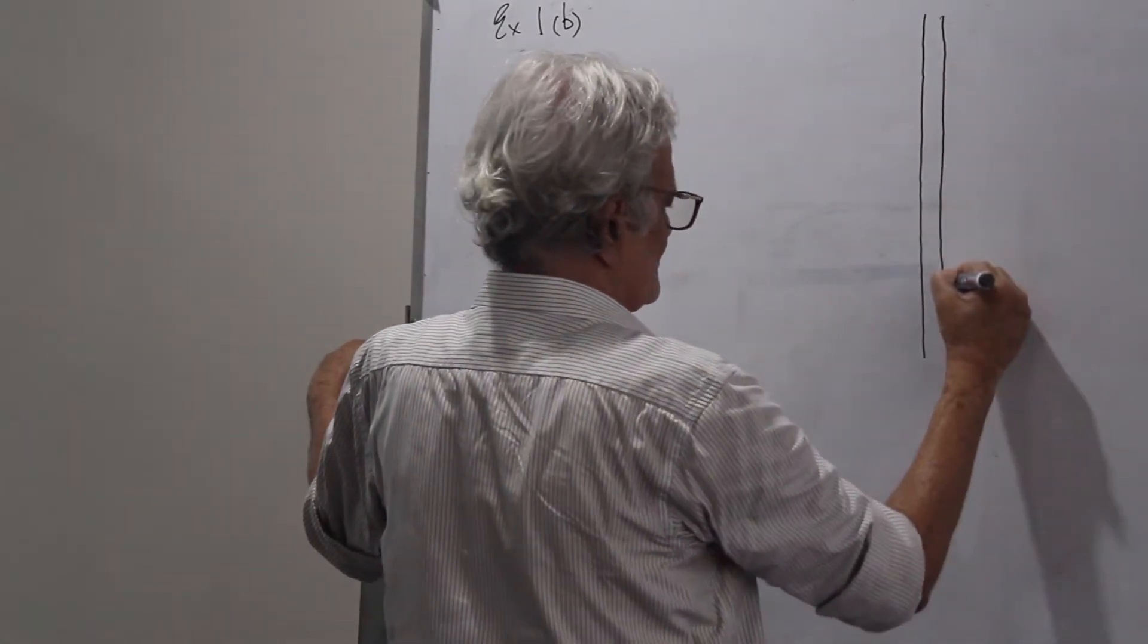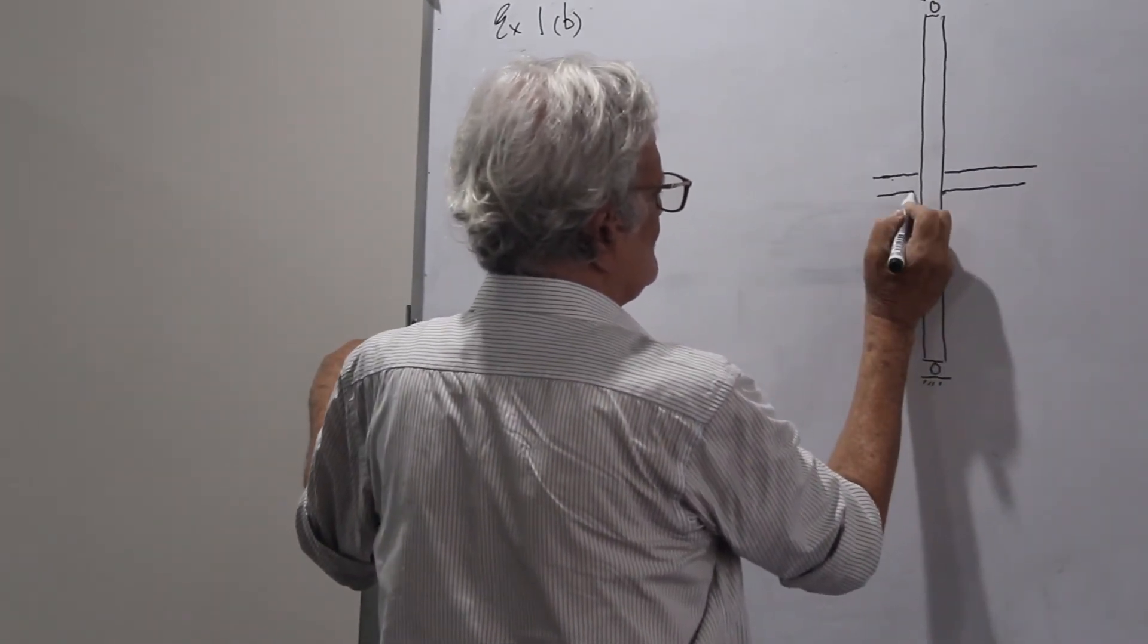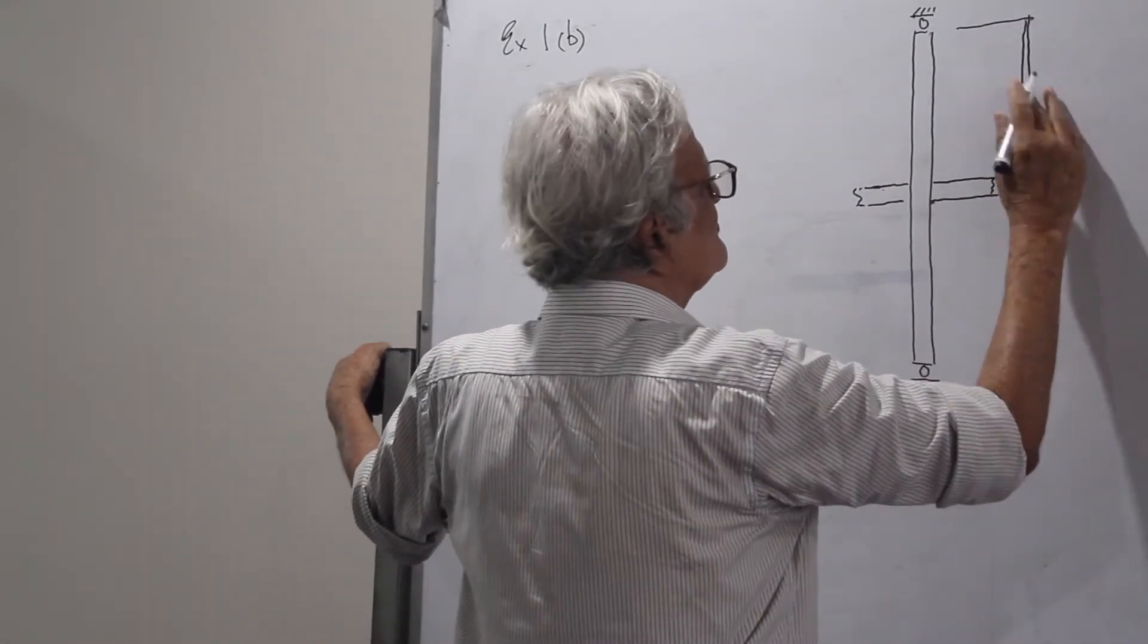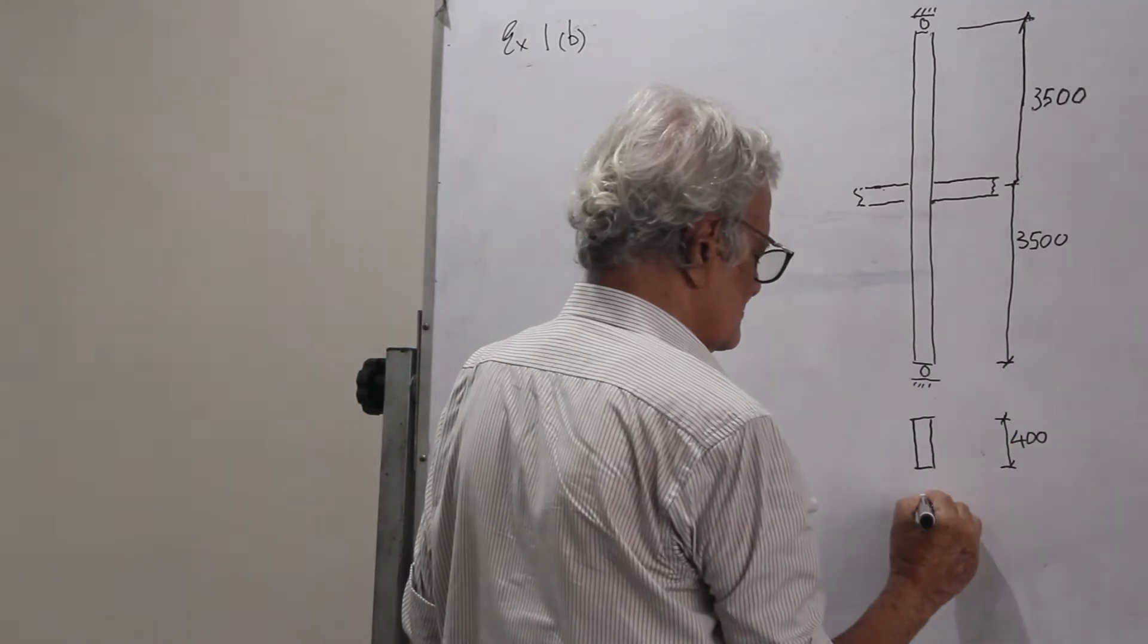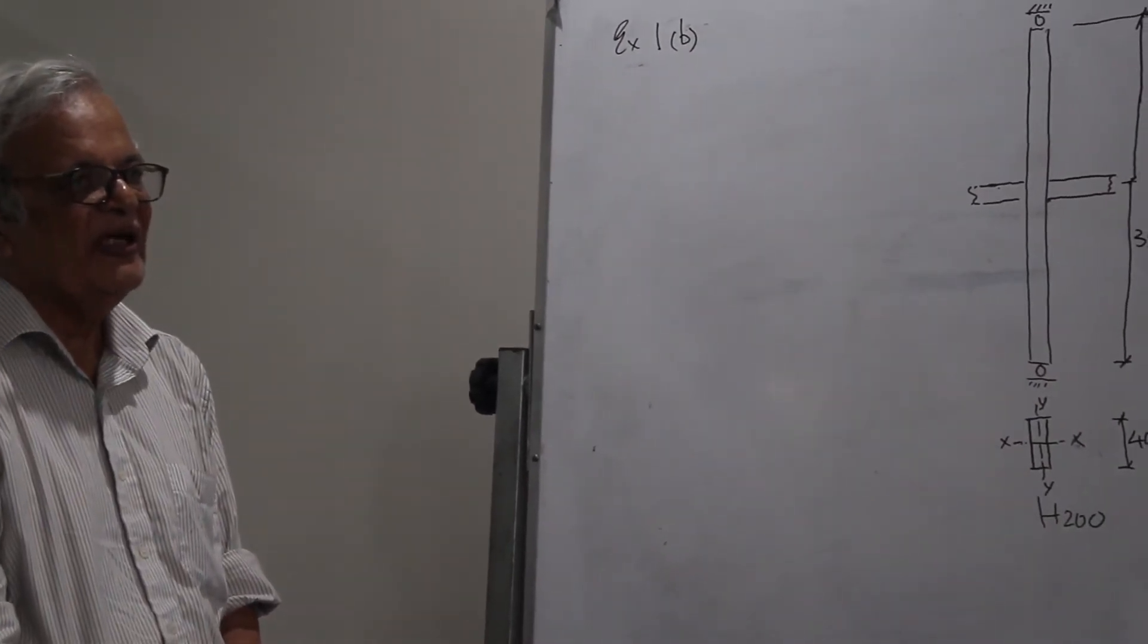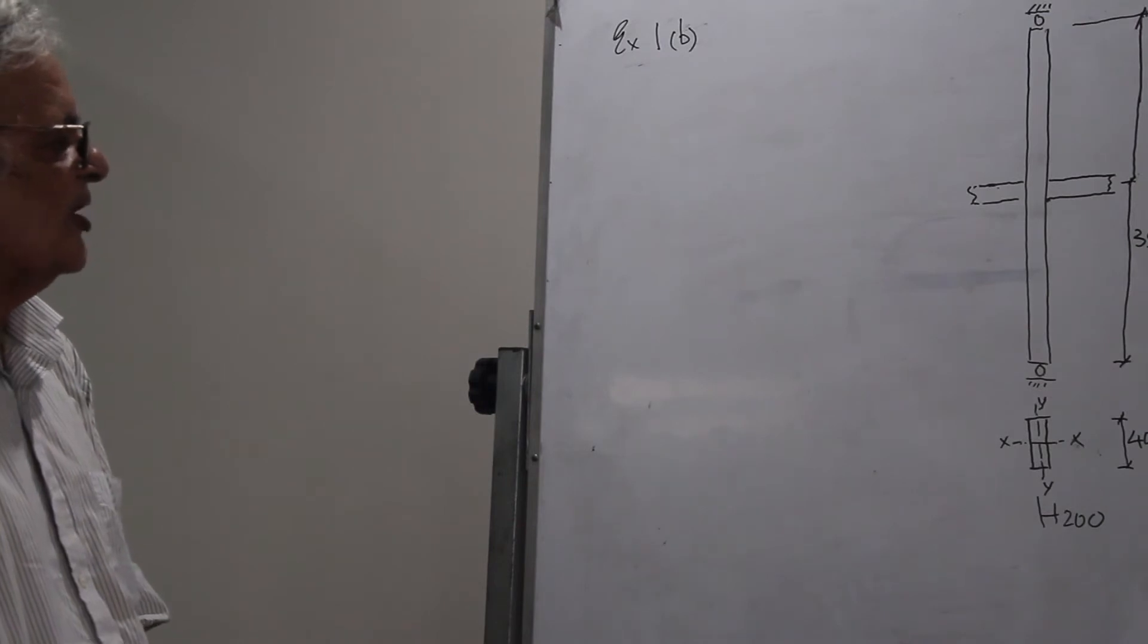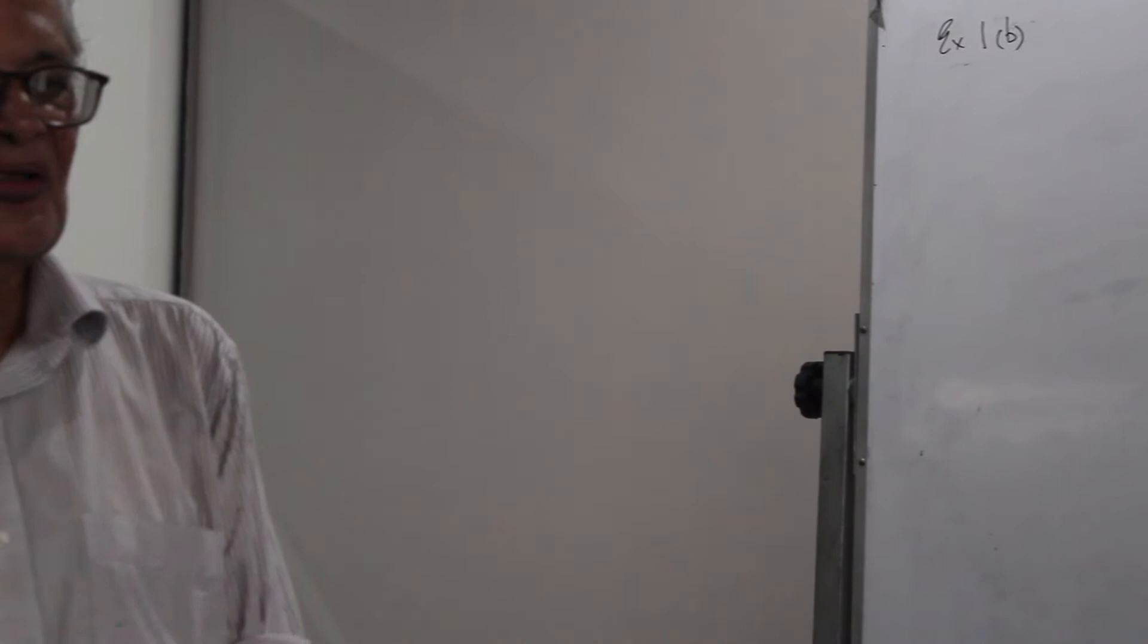Example 1B. If buckling about the y-axis is restrained by a horizontal beam at mid-height of the column, find about which axis buckling will take place and hence find the buckling load.